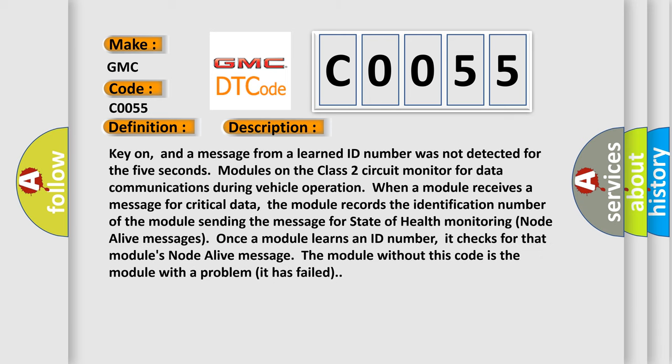Key on, and a message from a learned ID number was not detected for five seconds. Module on the Class 2 circuit monitors for data communications during vehicle operation. When a module receives a message for critical data, the module records the identification number of the module sending the message for state of health monitoring node alive messages. Once a module learns an ID number, it checks for that module's node alive message. The module without this code is the module with a problem. It has failed.